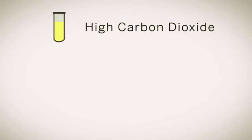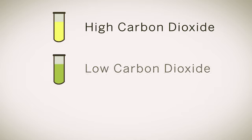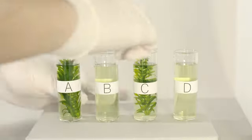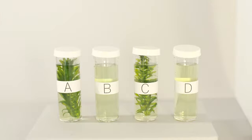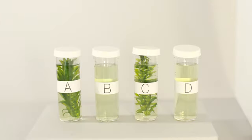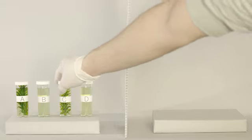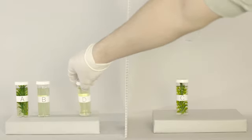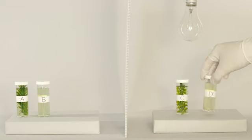Yellow means that there's a high level of carbon dioxide, green means that there's a low level, and blue means that there is no carbon dioxide. These vials are yellow because they have a high level of carbon dioxide. Now we're going to leave some vials in the light and some in the dark to test how light affects photosynthesis.